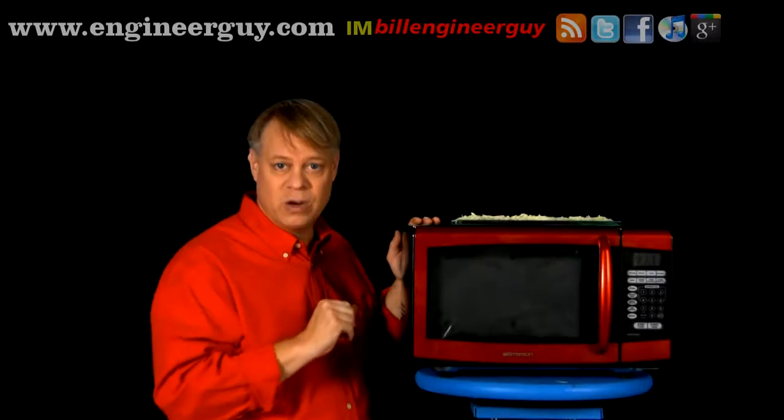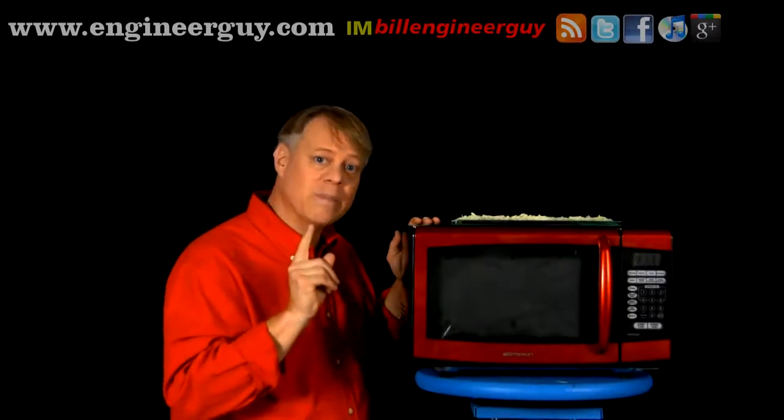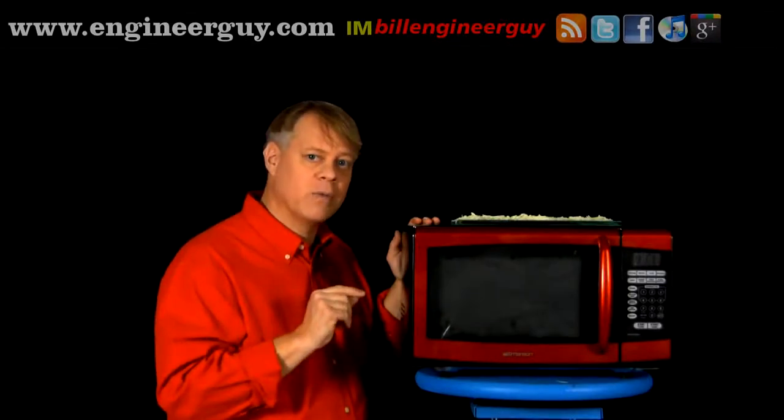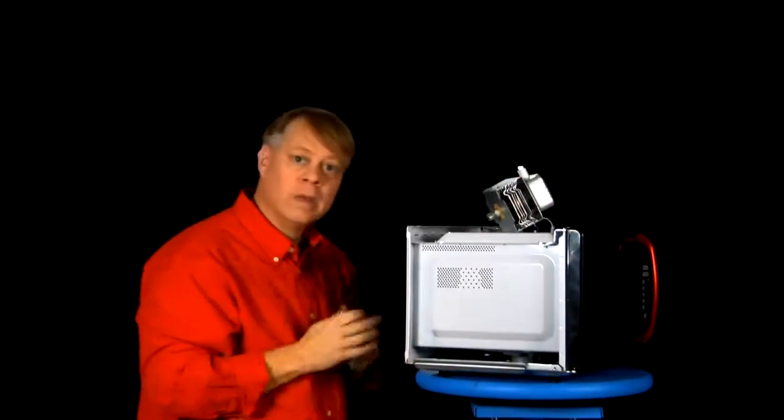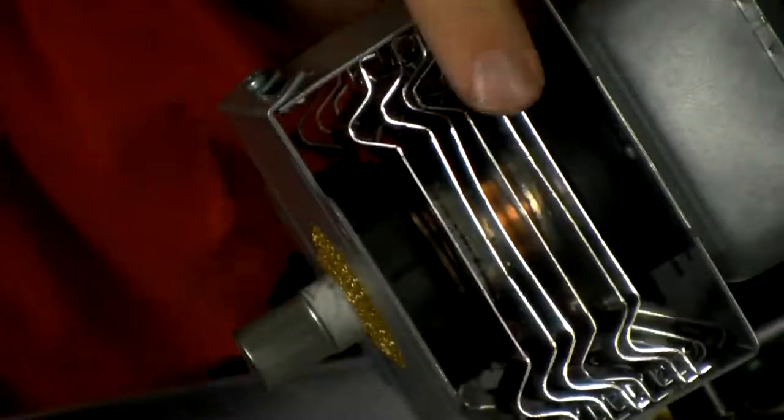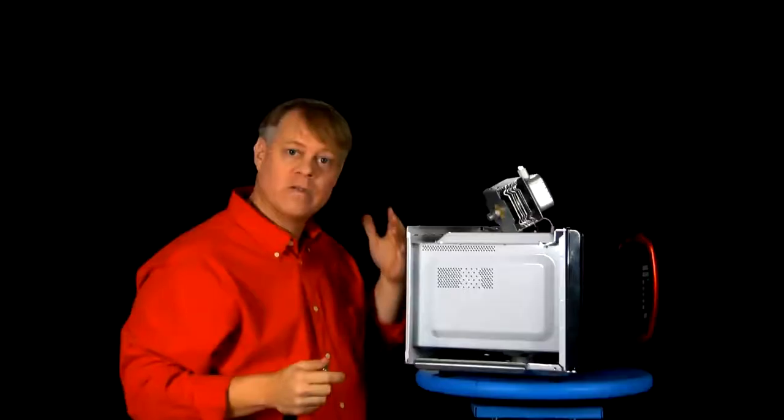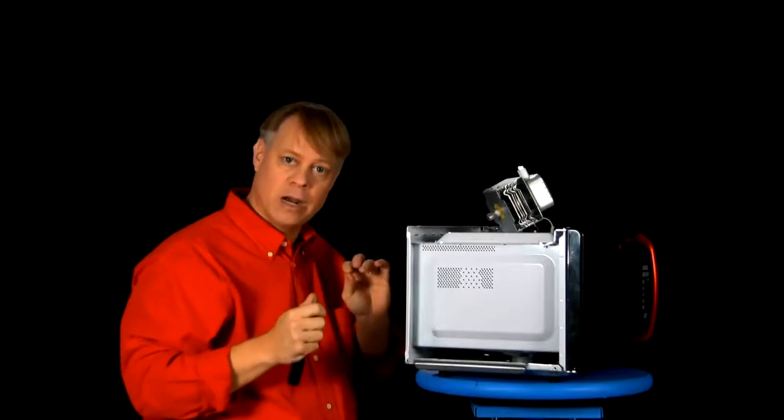The real engineering in the microwave oven lies in creating the magnetron that generates high-powered radio waves. It's truly an amazing and revolutionary device. The vacuum tube is inside here. These are cooling fins, thin pieces of metal that dissipate the heat as the magnetron operates.